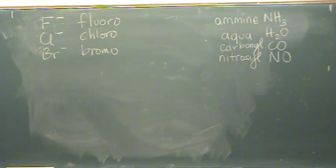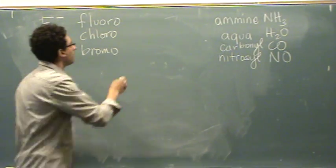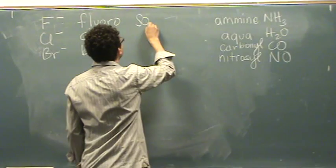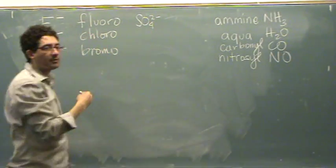If you have other ones, like you could have a polyatomic SO4^2-. What is that normally called? That's sulfate. That's sulfate, A-T-E ending. You change the E to O, so it's sulfato.